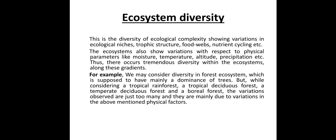Finally, the last type of diversity is ecosystem diversity. What is meant by ecosystem diversity? This is the diversity of ecological complexity, showing variation in ecological niches, trophic structure, food webs, nutrient cycling, etc. So this is the diversity of ecological complexity.